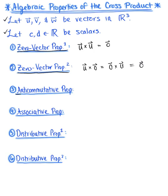Property number three we observed in the previous example — the anticommutative property. This property says that vector u cross vector v is equal to minus the cross product of vector v and vector u.